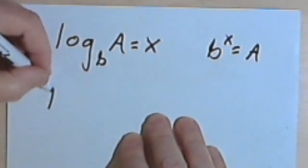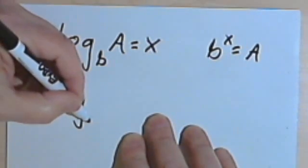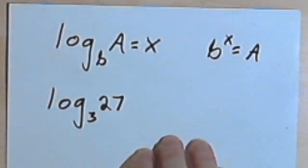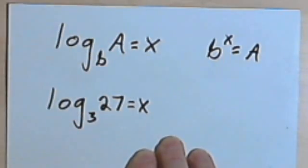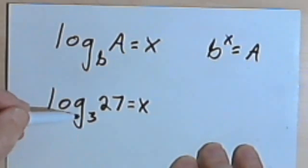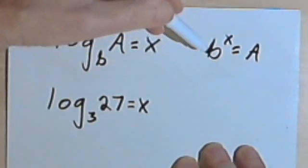So let's say, for a first problem, that we're told that we've got the log base 3 of 27 and we want to find out what that equals. Well, I'm going to say that what that equals is x. And now I want to find out what the x is. So I'm going to convert this log base 3 of 27 equals x to the exponential form.